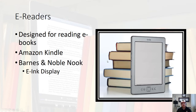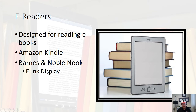E-readers are another thing I wanted to cover. They're designed for reading ebooks, which are digital versions of books that you download onto the device. The reason you'd use an e-reader as opposed to a tablet is because it uses an e-ink display, which is easier on the eyes and easier to read. The two that are probably the most popular are the Amazon Kindle and the Barnes and Noble Nook.